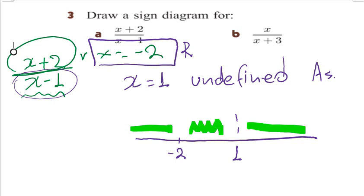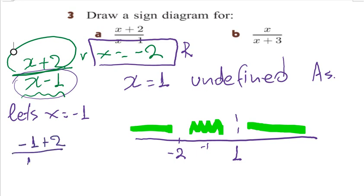We use the same technique to determine the sign value in each area. Let's say x = −1 and see what the sign is there. (−1 + 2) over (−1 − 1) equals 1 over −2, which is negative one-half. So this area is negative.